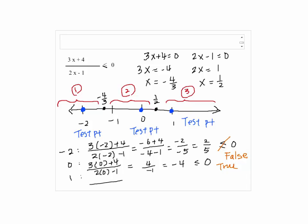The last test point gives us 3 times 1 plus 4 over 2 times 1 minus 1, so it will be 7 over 1, which is 7. That is not less than or equal to 0, so it is also a false statement.